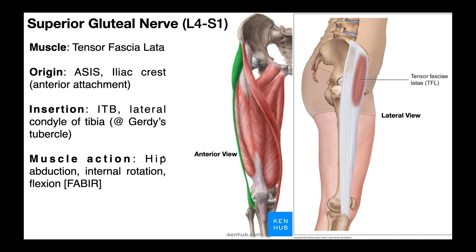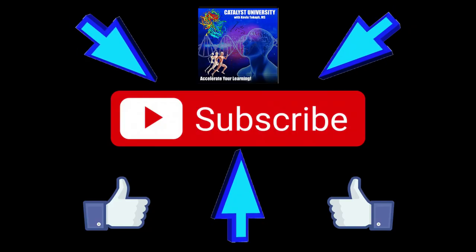The tensor fascia latae is similar to the gluteus medius and minimus in that it's a hip abductor and internal rotator of the hip. It probably wouldn't surprise you then that it too is innervated by the superior gluteal nerve, nerve roots L4 through S1, just like the glute med and the glute min. Hopefully this video gave you a good understanding of the tensor fascia latae muscle. Please make sure to like this video and subscribe to my channel for future videos and notifications.